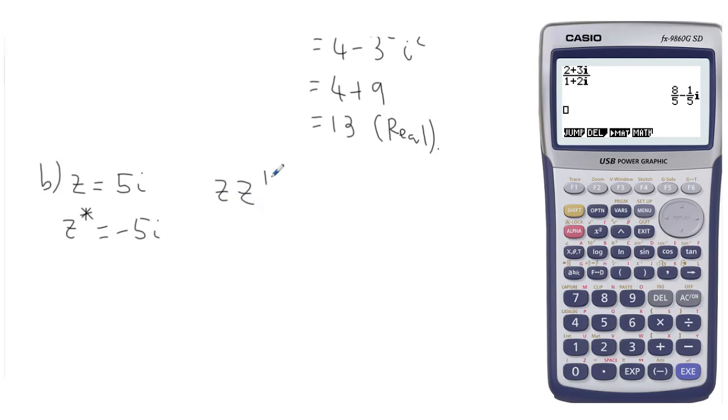And then if we do z times the conjugate of z, well, that's 5i times minus 5i. So that's 5 times minus 5, which is minus 25i squared. Remember, i squared is minus 1. So that is minus 25 times minus 1, which ends up being 25, again, which is real.